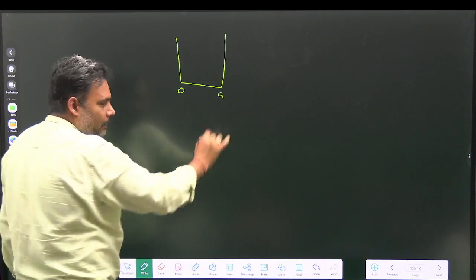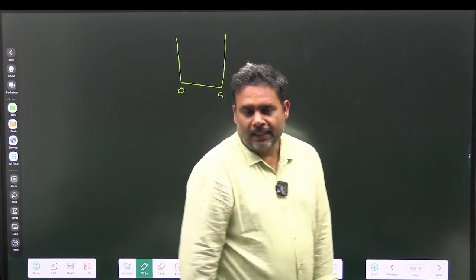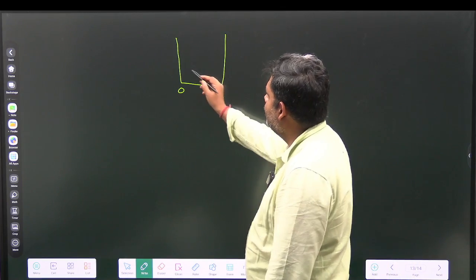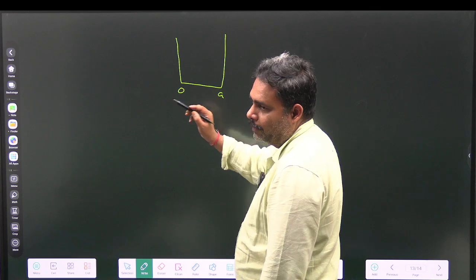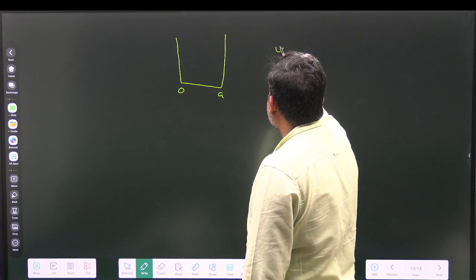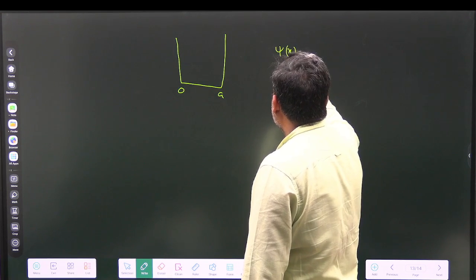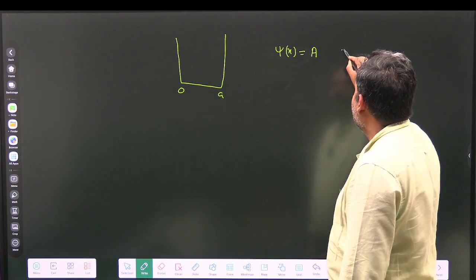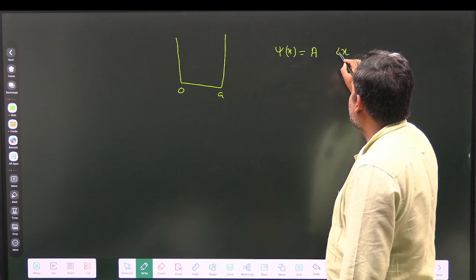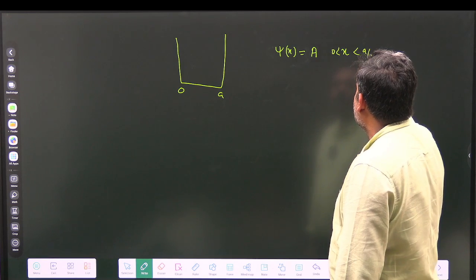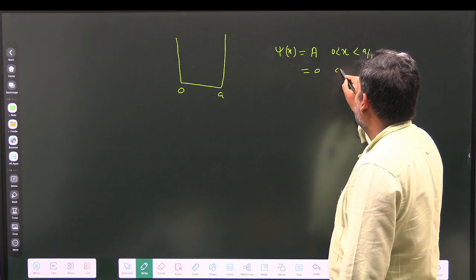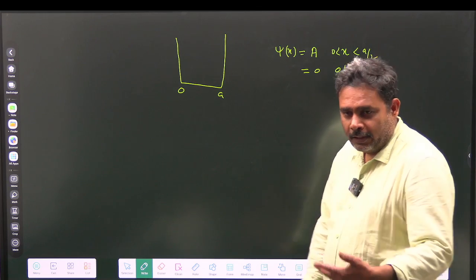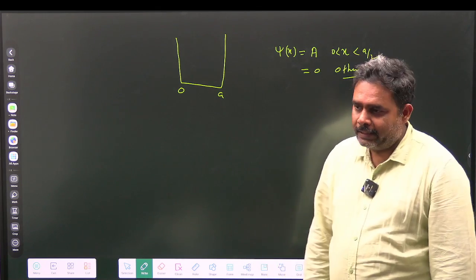The box goes from 0 to a since the width is a. Since the particle is equally likely to be found anywhere in the left half, the initial state is: ψ(x) = A (constant) for x between 0 and a/2, and 0 otherwise. Now we need to normalize it.